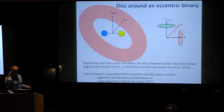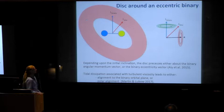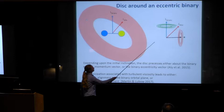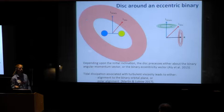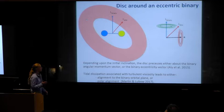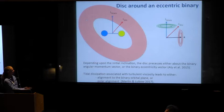Back to what happens with a disk around an eccentric binary. If the inclination is low, the disk aligns to the angular momentum vector of the binary as before. But if the initial inclination is sufficiently high, the disk can instead precess about the eccentricity vector. As I'll show in simulations, this leads to the disk aligning to the eccentricity vector — what we call polar alignment.